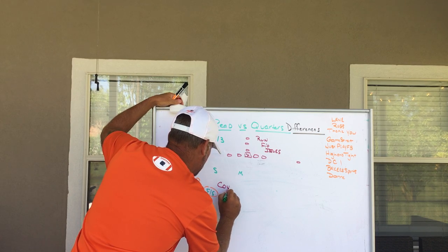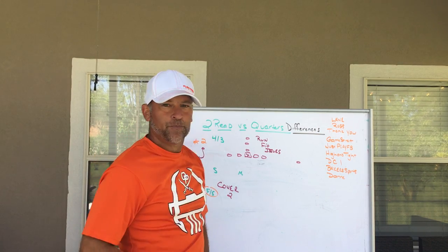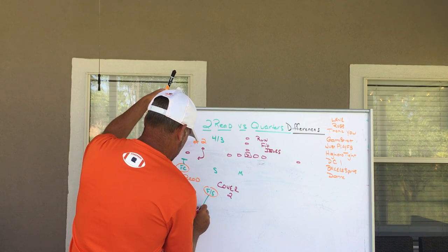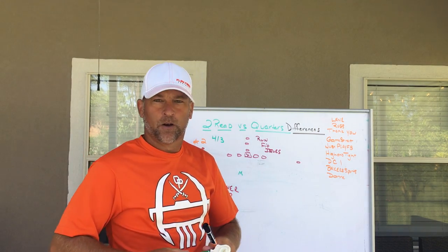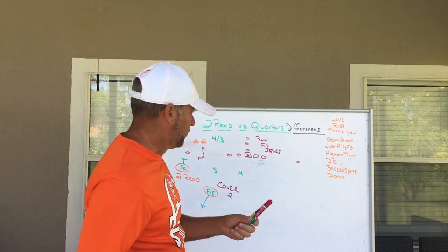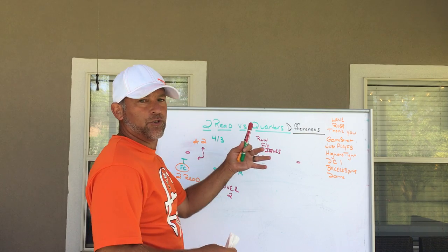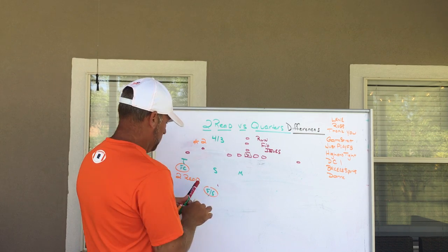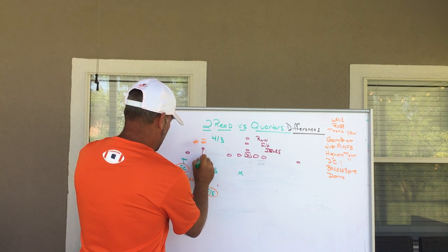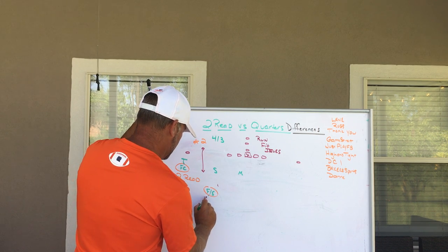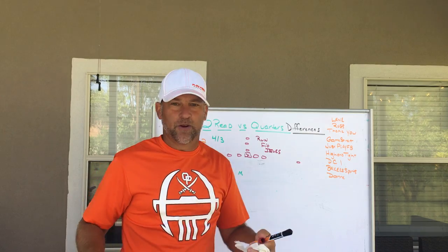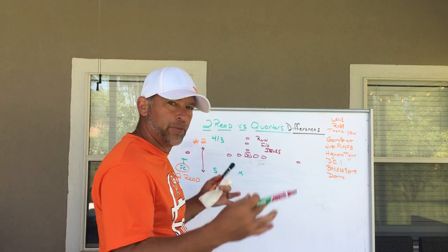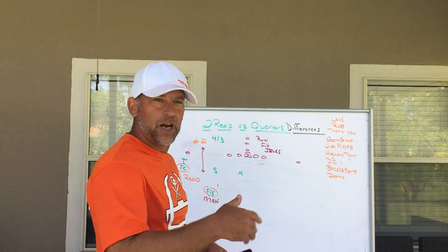That's one of the reasons it's called two-read — not only are we reading number two, but two going to the flat makes this side of the coverage simply become cover two. As soon as two goes to the flat, this side becomes cover two: the corner plays two to the flat and the free safety has to get over the top of number one. If number two goes vertical past linebacker level, the free safety plays him man — no seam issues. If two goes vertical, the field corner plays number one man, except for shallows and underneath routes.